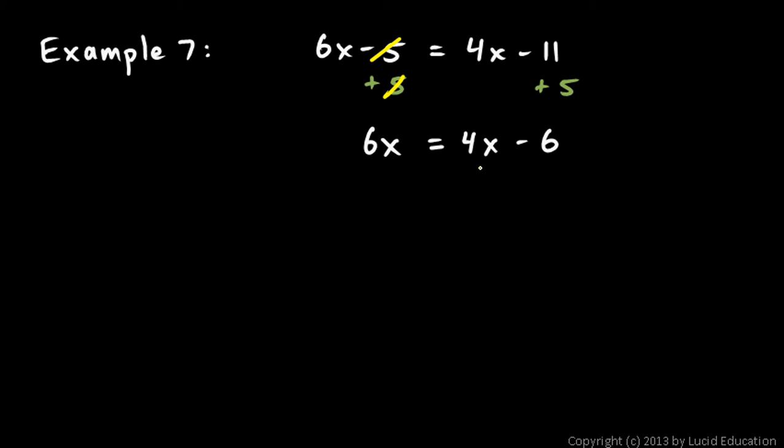Now, I'm going to get rid of this 4x, and I'll do that by subtracting 4x, which means I also have to subtract 4x on the other side. Now, I'm going to write my equal sign, and let's see what this leaves us with on each side. On the left, 6x minus 4x is 2x. On the right, 4x minus 6 minus 4x. Well, this 4x and the minus 4x cancel out.